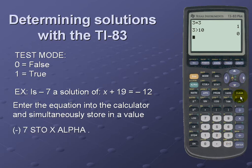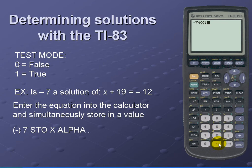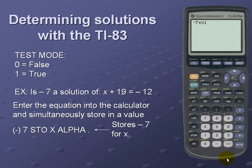So I'm going to clear my screen. And I'm going to take negative 7 and we're going to store that for x. I'm going to use a semicolon—notice the semicolon is the alpha and the decimal point. This actually stores negative 7 for x in our equation.